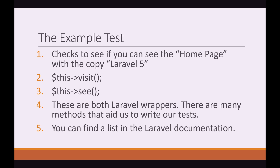I won't show you the code first — let's just get a basic understanding. The example test actually checks to see if you are on the home page with the copy 'Laravel 5'. It utilizes two helpers: visit and see, which are known as Laravel wrappers. There are many methods that Laravel provides us with to write our tests, above the PHP Unit syntax — just extra helpers to make our life easier. You can find a list of these wrappers in the Laravel documentation.